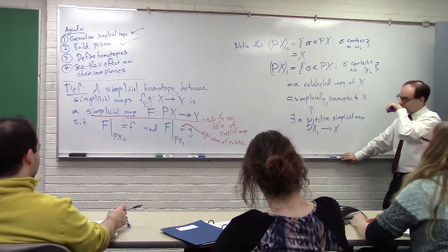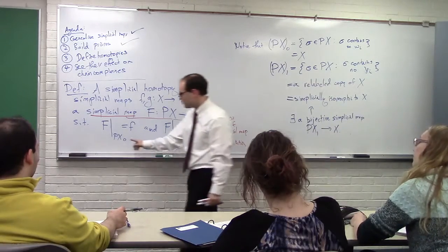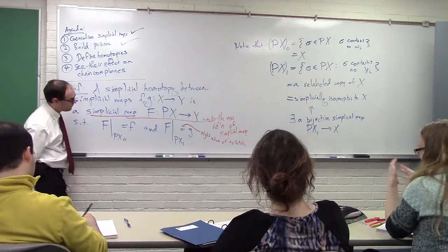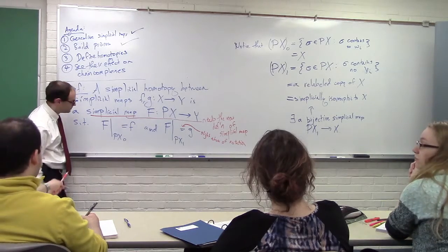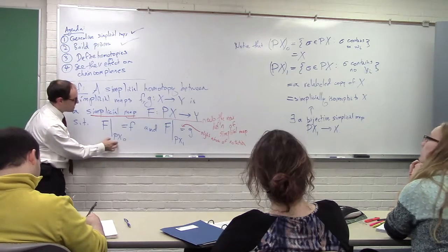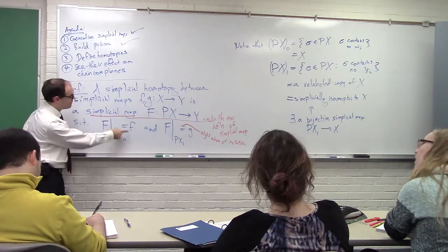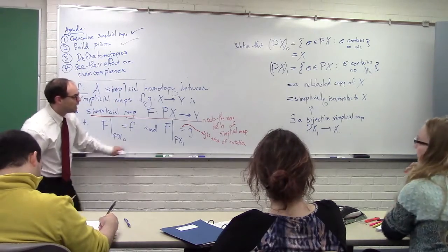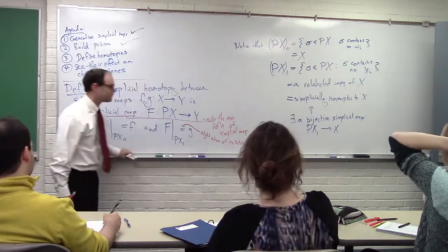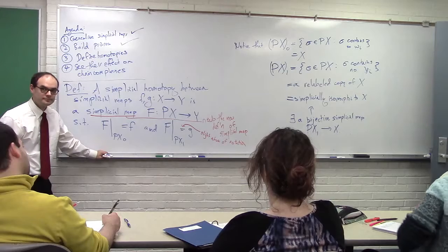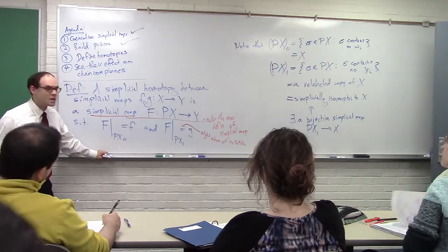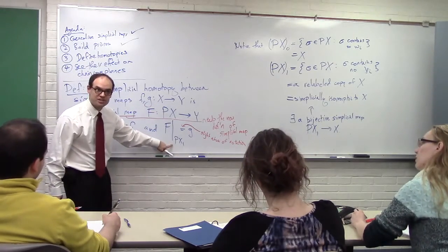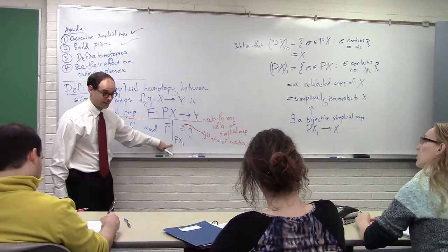A restriction just means changing the domain — take F and make its domain just that set, don't consider anything outside it. So if I just consider all the points in P(X)_0 as the domain of capital F, I get back my original little f. And if I take points in P(X)_1, up to the simplicial isomorphism, I get g. That's what I mean by slight abuse of notation, because g and f both have the same domain X, while this is the other copy of X.